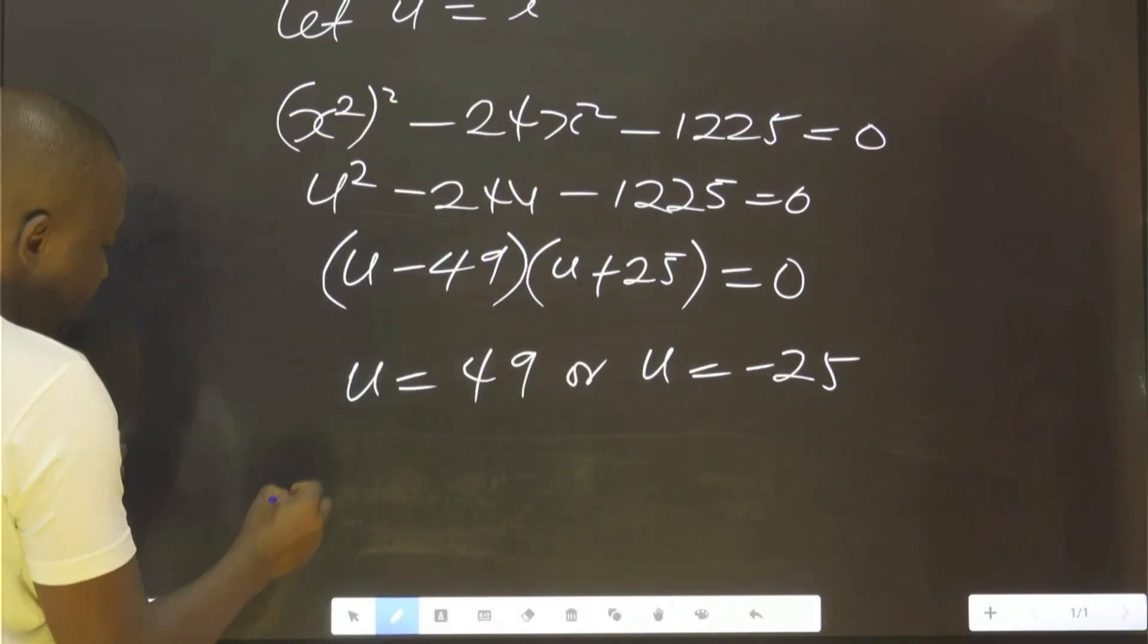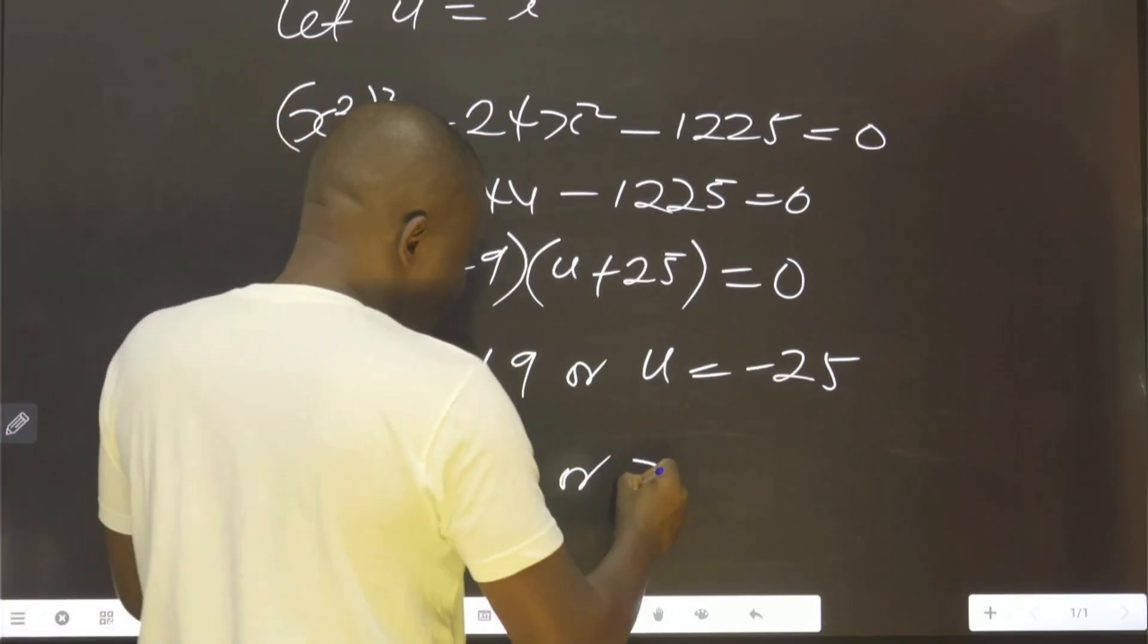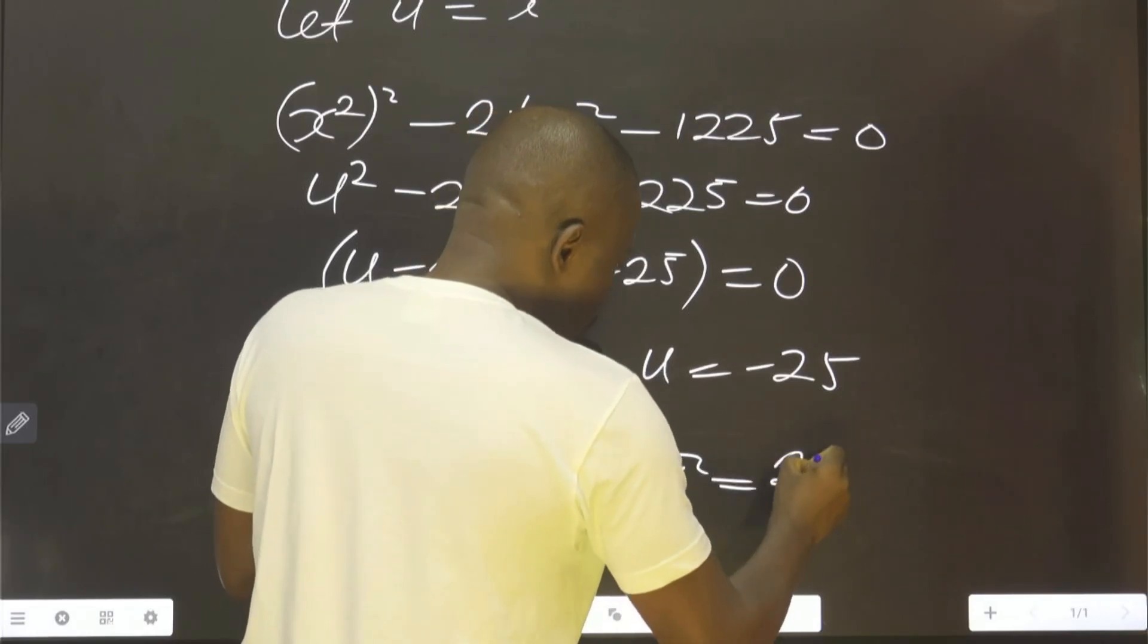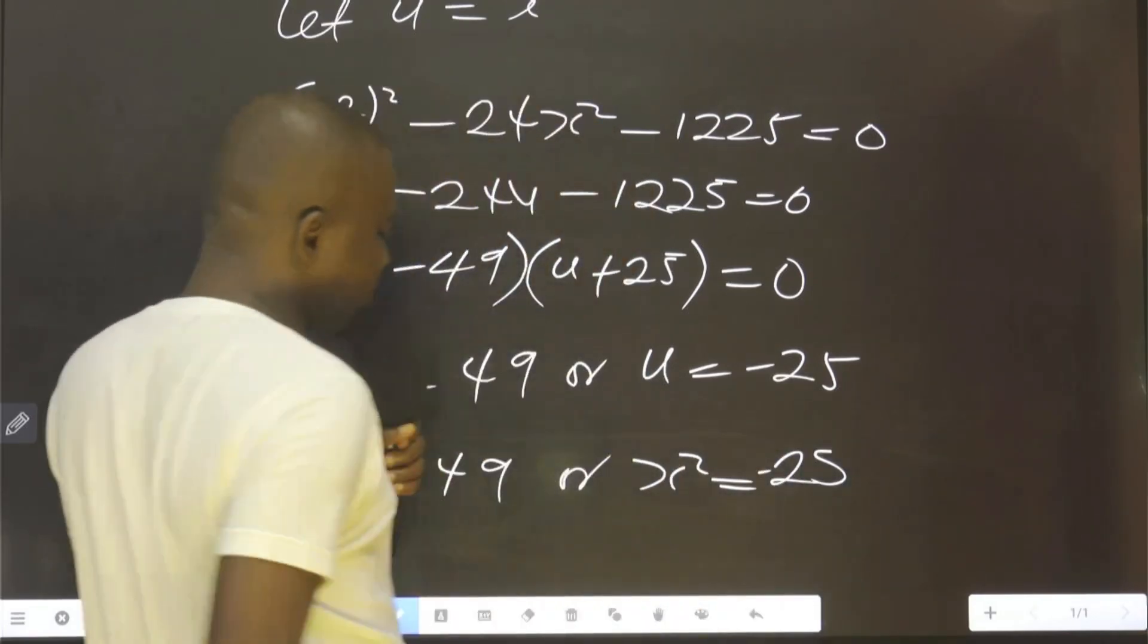What is u before? u is x². So x² = 49 or x² = -25.